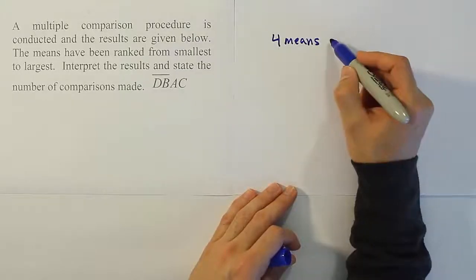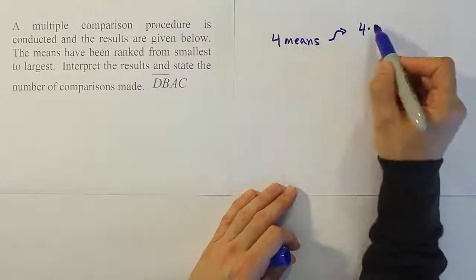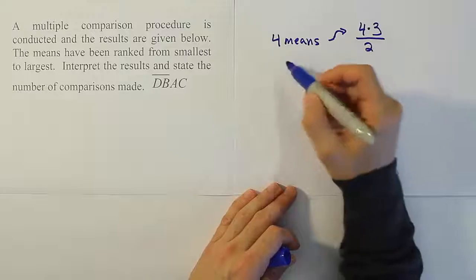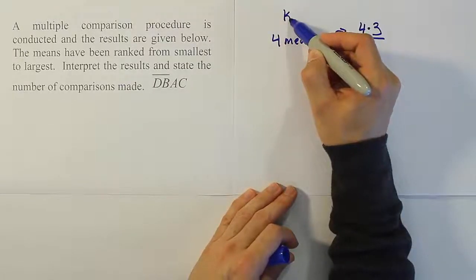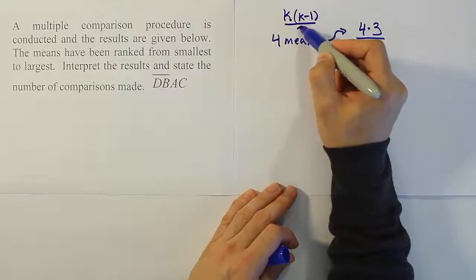Basically what the formula is for working that out is pretty simple. You take this number and you multiply by one less than it, and you divide by two. So the formula, just generically again, we've seen this in another video, is that we have k times k minus 1 divided by 2.